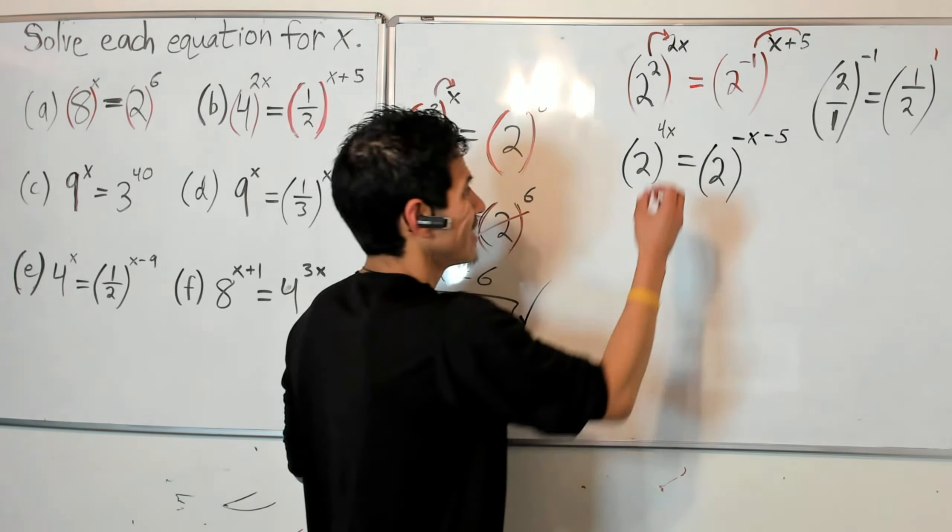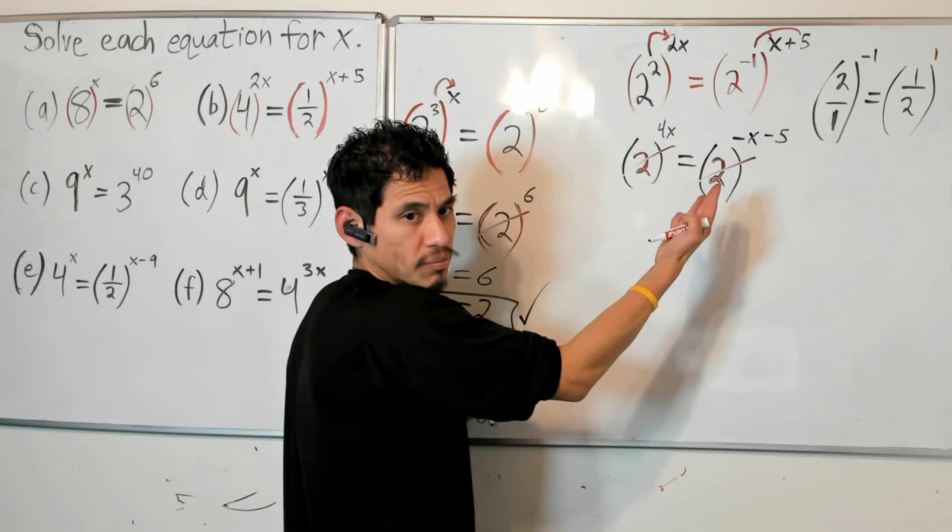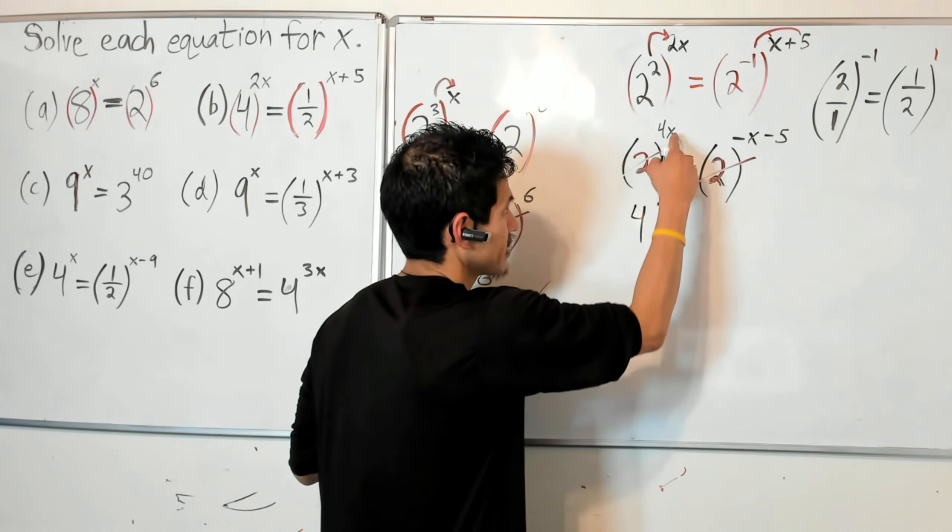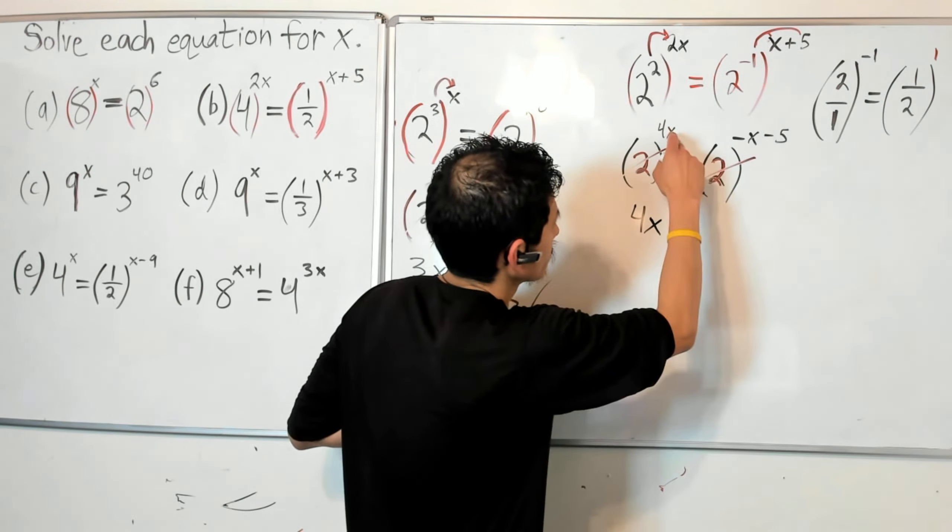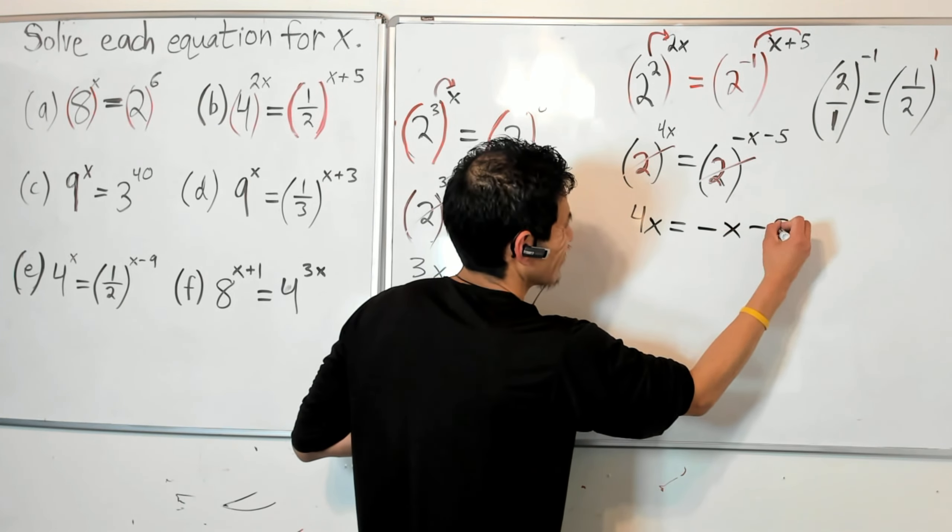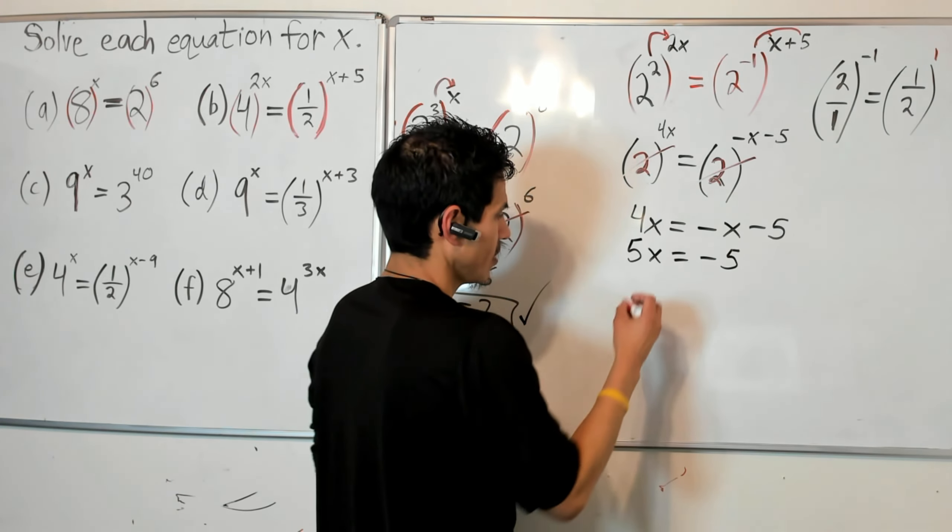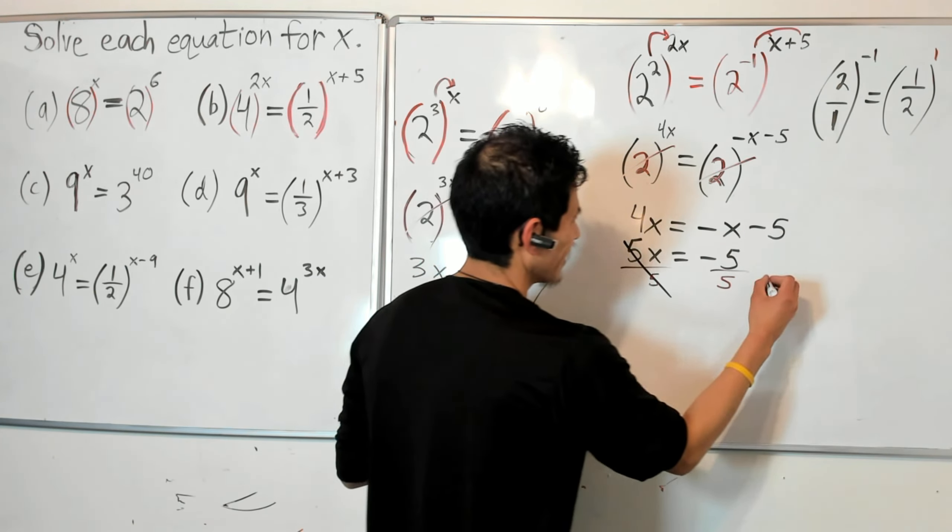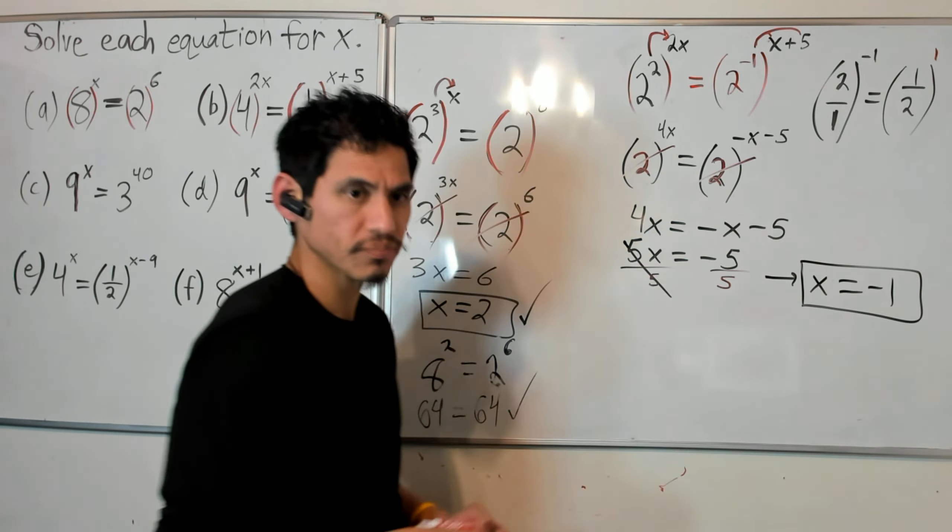They both want a piece of that negative 1, so make sure you do that. And you will get 2 to the negative x minus 5. And you see, inside the parentheses the bases, they're both twos, so you don't have to worry about them anymore. You just ignore them. And then I just took the exponents, 4x equals negative x minus 5. Add 5 to each side, 5x equals 1, x equals 1/5.